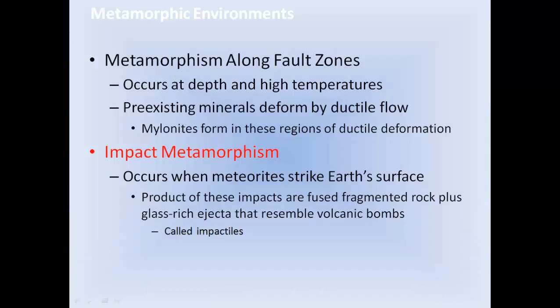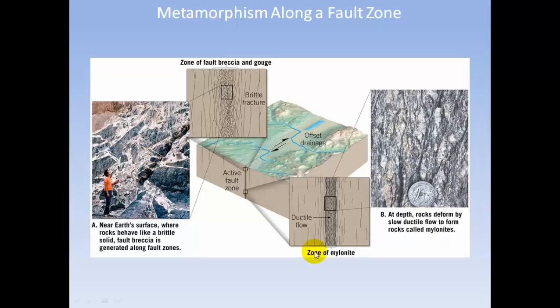Metamorphism along fault zones occurs at depth and high temperatures, with pre-existing minerals deformed by ductile flow. Mylonites form in these regions of ductile deformation. Impact metamorphism occurs when meteorites strike the surface; products include fused fragmented rock plus glass-rich ejecta resembling volcanic bombs, called impactites. Along the fault, the metamorphic rocks form a zone of mylonite.